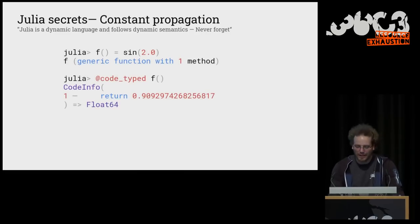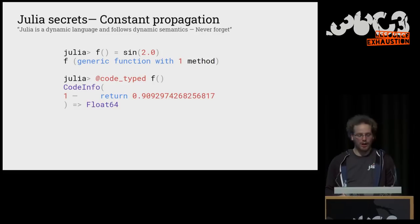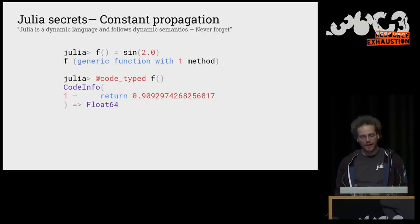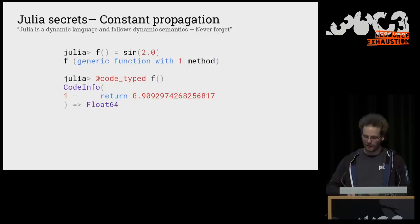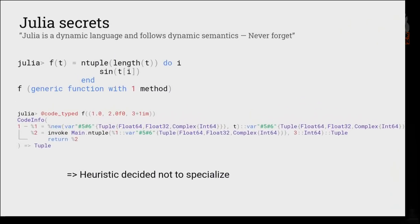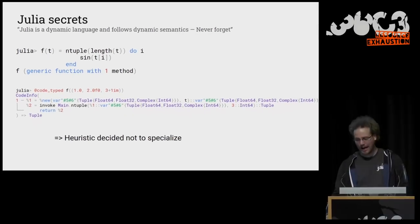We also do constant propagation: we try to exploit as much information as possible. If you write a function F and call sine with a constant value, we actually just return you the constant, avoiding the calculation of sine entirely — which can be very important during hot calls in a cycle. This can sometimes go wrong, and Julia has heuristics to decide whether these optimizations are valuable. When you introspect your code you might see results that are not quite what you want. But the nice thing about Julia is that we can do forced specialization, and hopefully we'll make the compiler smart enough that these edge cases disappear.